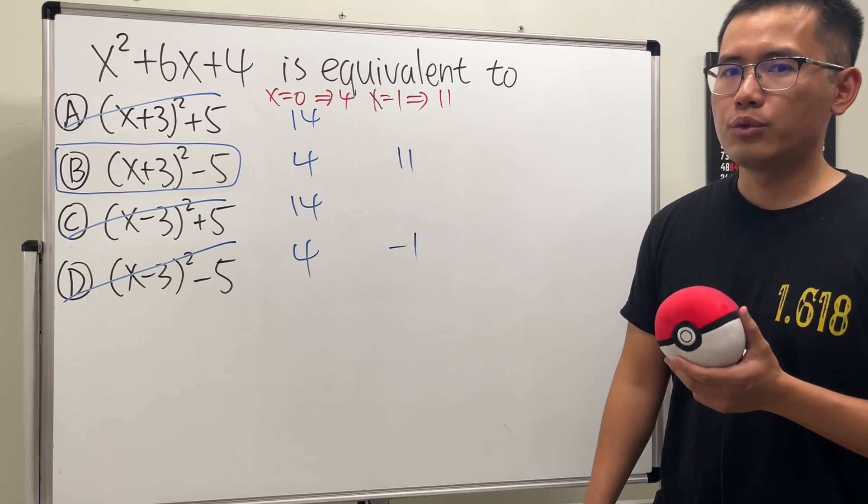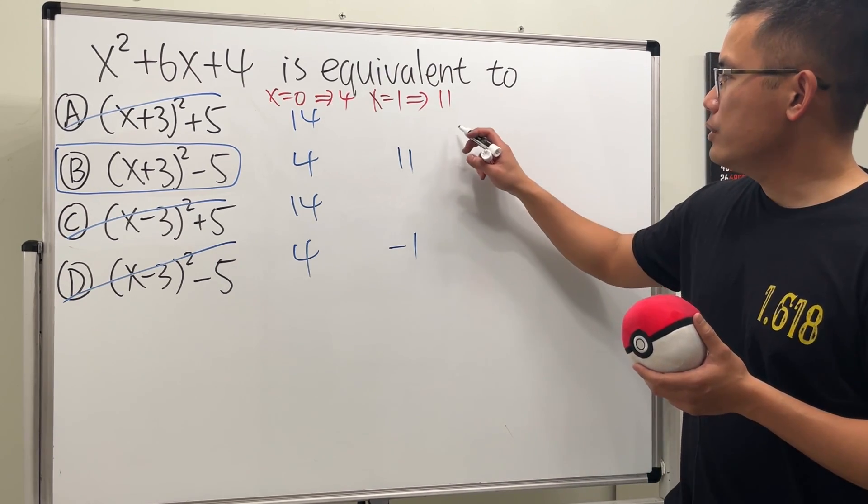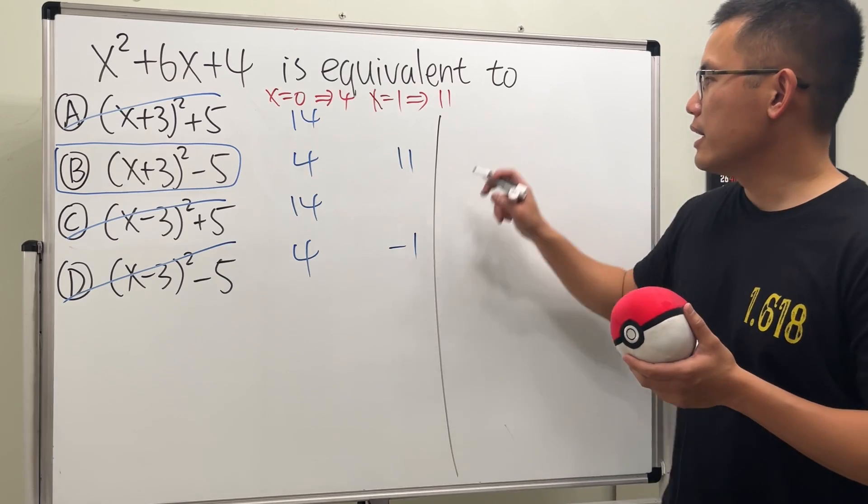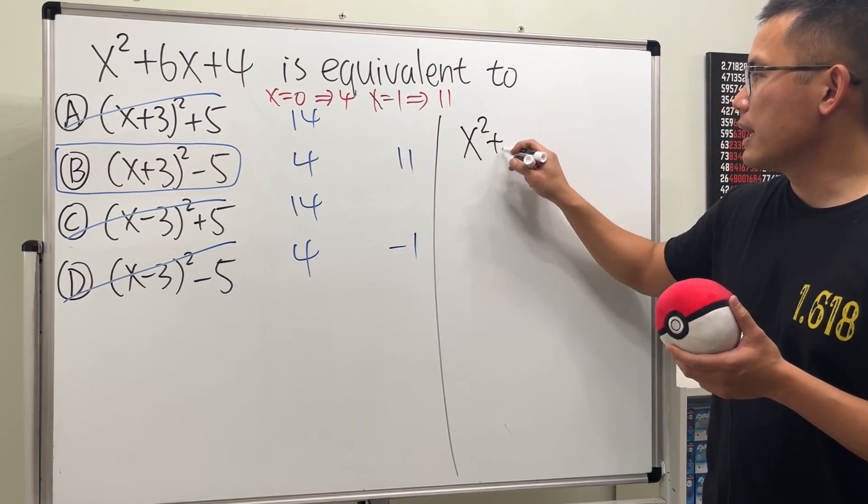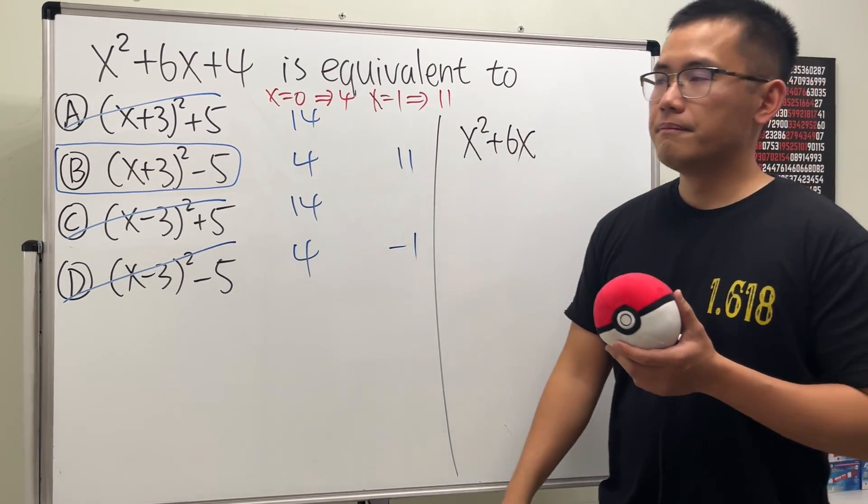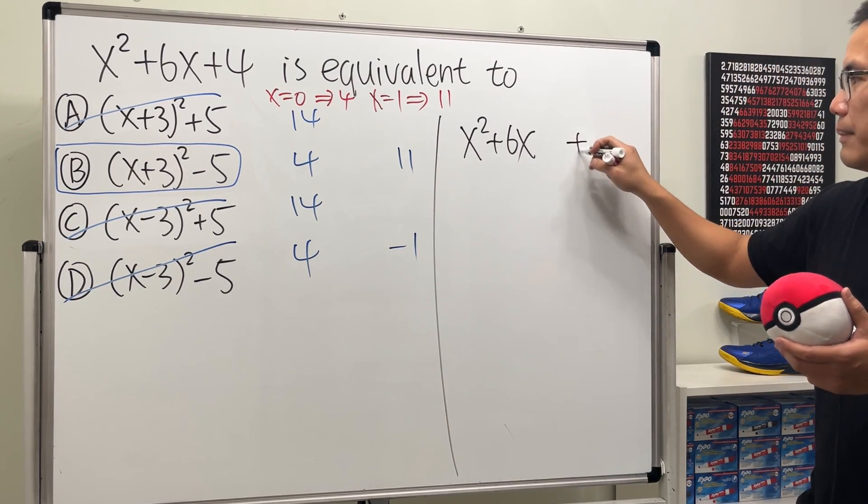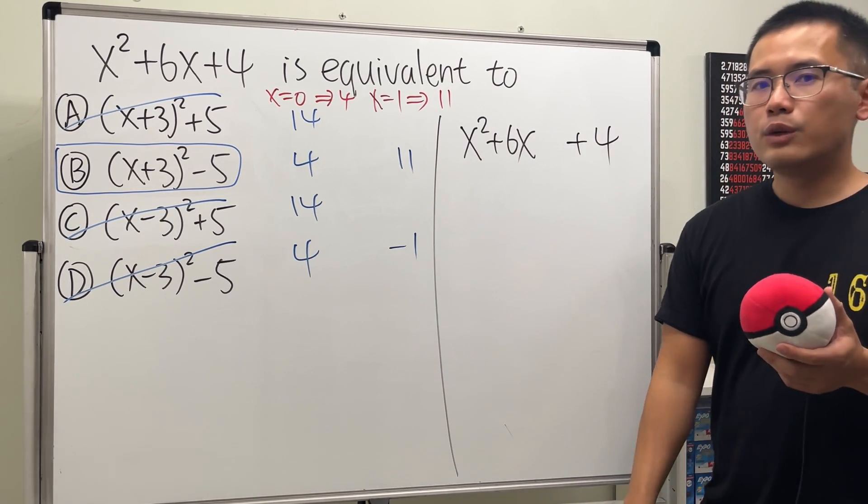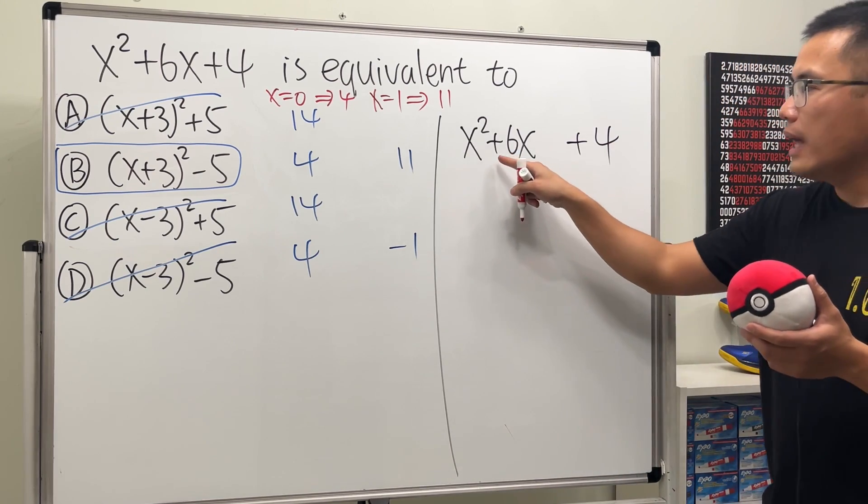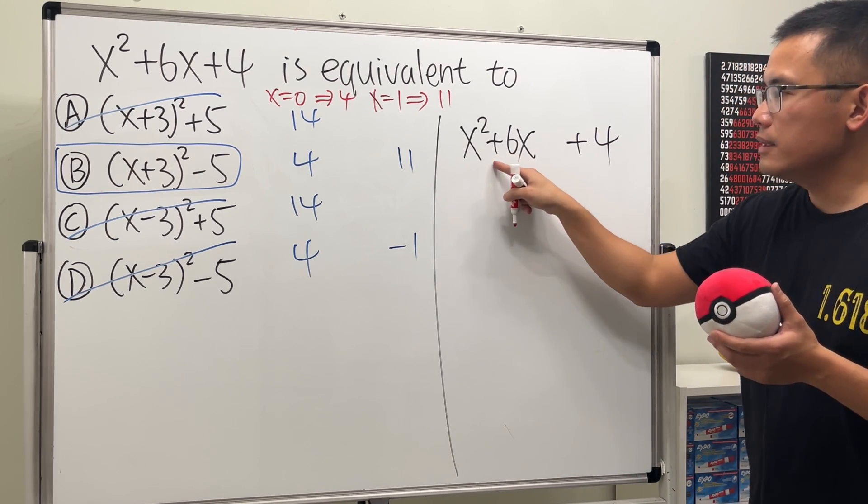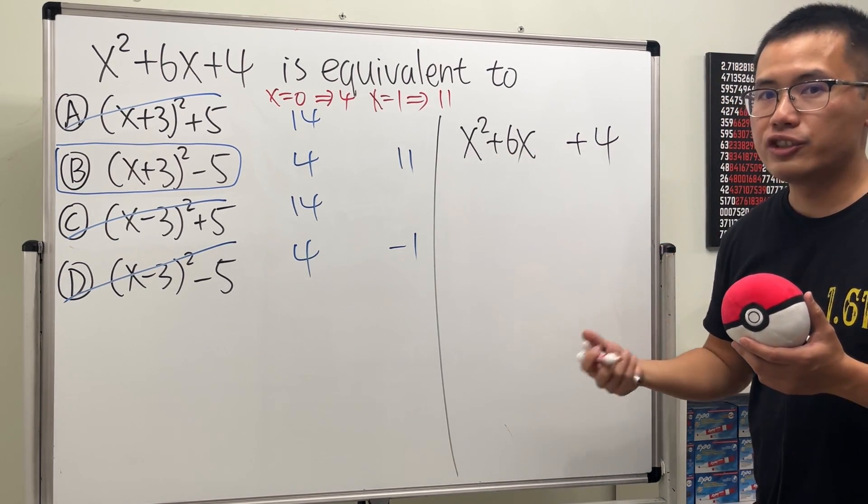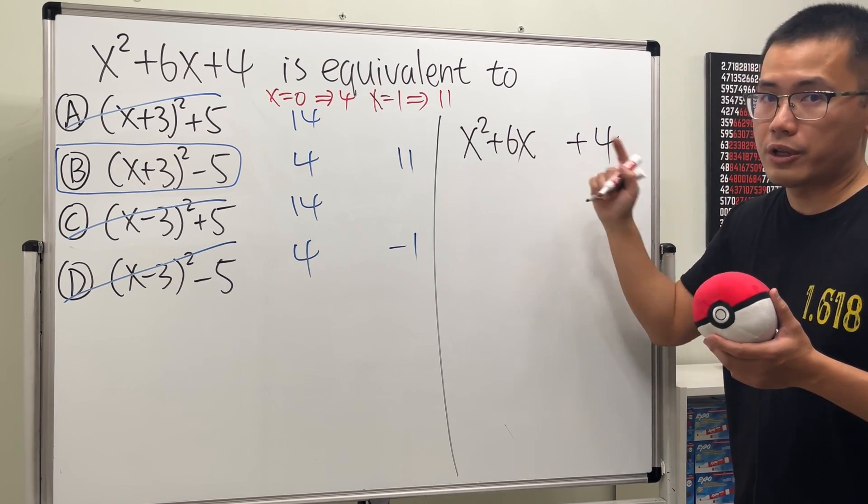Again, is that we have to complete a square. And to do so, let me just write that down again. We have x squared plus 6x. And for the plus 4, I'm just going to leave a space here first and then put on a plus 4. And the reason why is because now we are going to look at this number and then figure out the magic number. And that will be going right here.